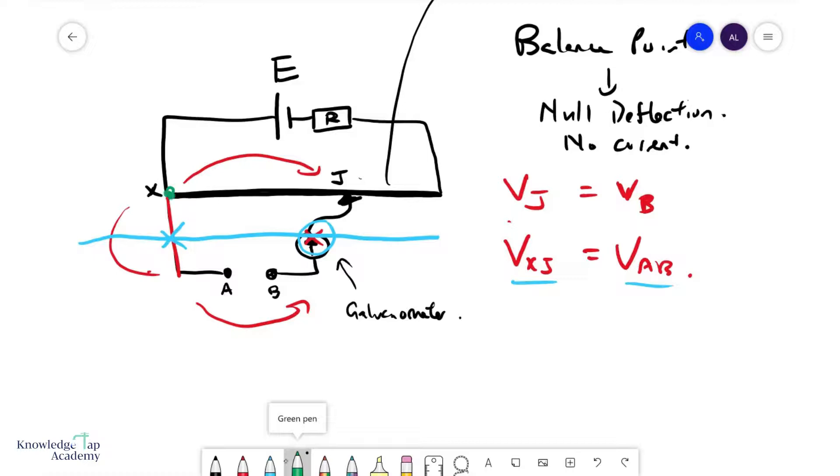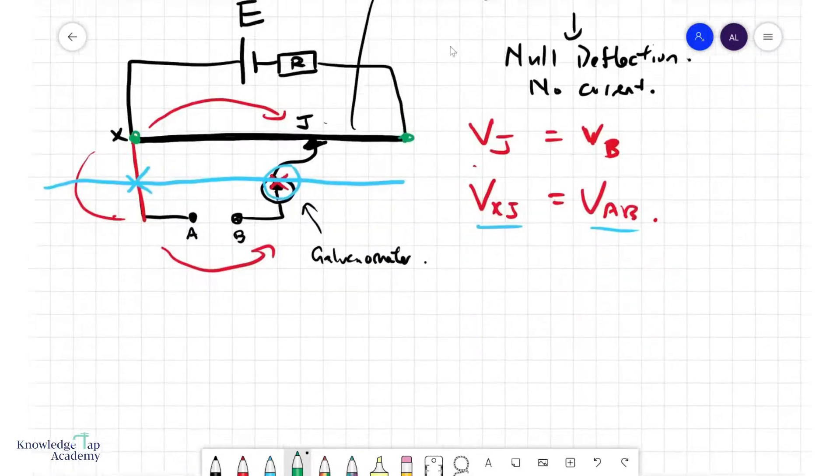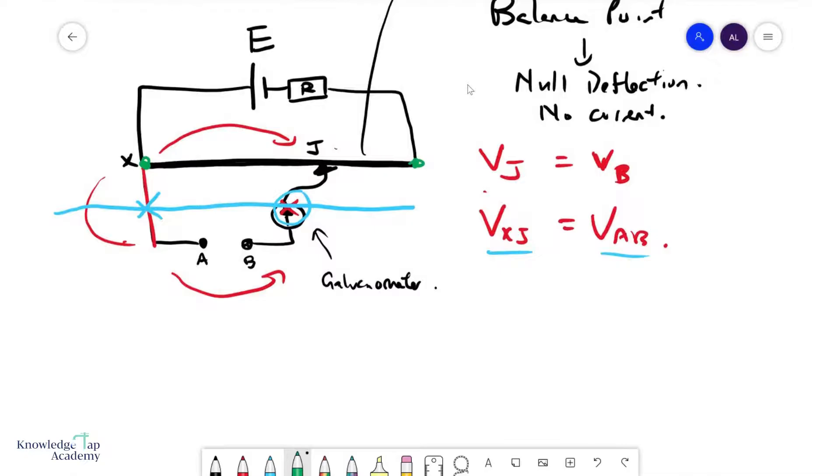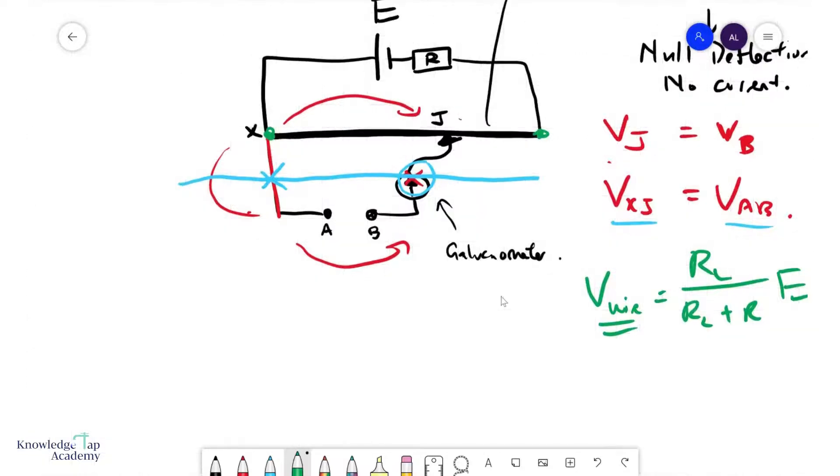We need to find the potential difference across this wire first. Since we said this wire had a resistance of RL, Vwire is simply equal to RL over RL plus R, that's the total resistance in this top circuit, multiplied by E. Then we can use the fact that in a uniform wire...